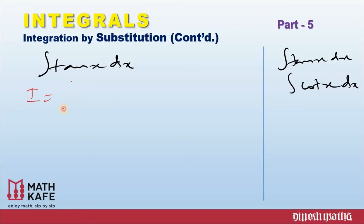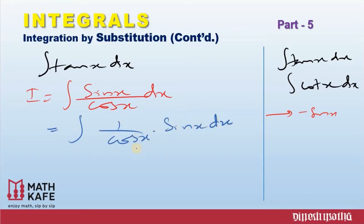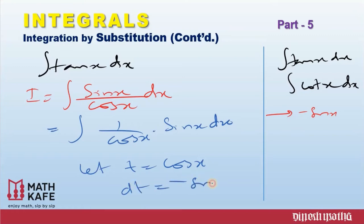We can't integrate tan x directly, so we use the substitution method. Tan x can be written as sin x / cos x. The basic technique is that one function and its derivative must both be present. The derivative of cos x is minus sin x, and we have sin x in the numerator. So we substitute t = cos x, giving dt = minus sin x dx, which means negative dt = sin x dx.